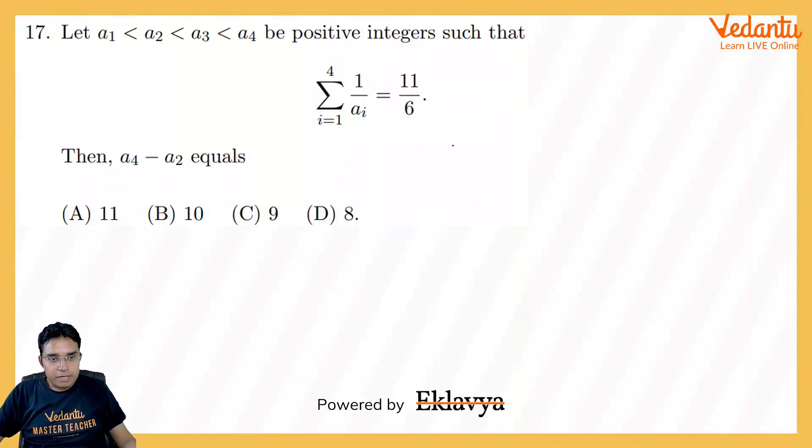Coming to question number 17, which says let a1 less than a2 less than a3 less than a4 be positive integers such that summation of 1 upon ai, i from 1 to 4, is equal to 11 by 6. Then a4 minus a2 equals. Now please listen carefully.